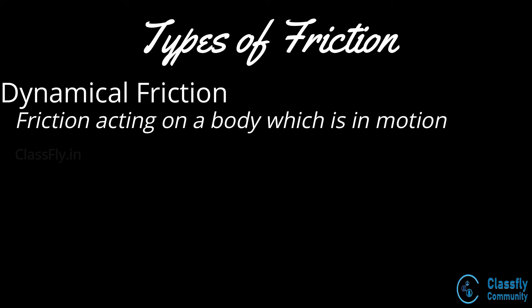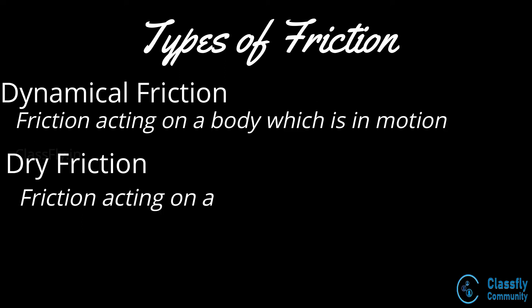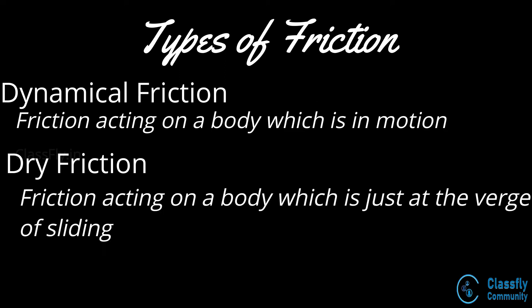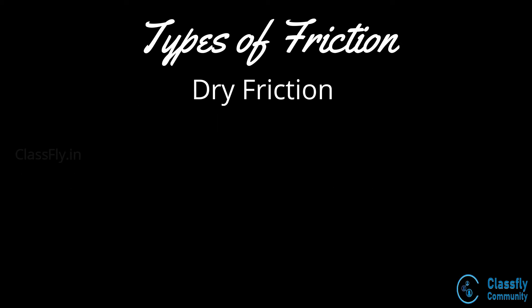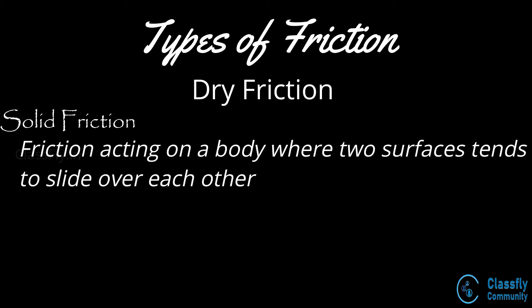Dry friction: this is the friction acting on a body when the contact surfaces are dry, meaning no lubrication is used between the contact surfaces, causing a tendency of relative motion between the two bodies. Dry friction can be further classified into two types: solid friction, which is the friction acting when two surfaces have a tendency to relatively slide over each other, and rolling friction, which is the friction acting on a body due to rolling of one surface over another.